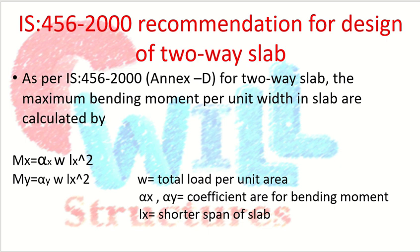Let's start with the basic recommendations for design of two-way slabs, which you can find in IS 456 Annex D. First we calculate the effective span, then the load, then the bending moment along both directions. The bending moment formula given by IS code is: Mx = αx · w · lx² and My = αy · w · lx², where αx and αy are bending moment coefficients, w is total load per unit area, and lx is the shorter span. Note that lx is used in both formulas.